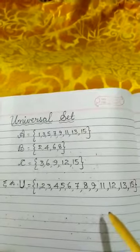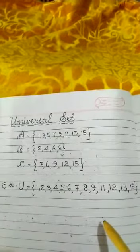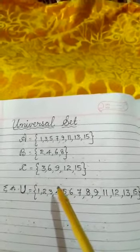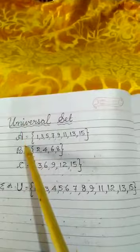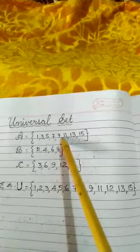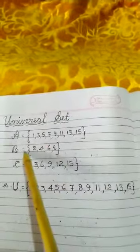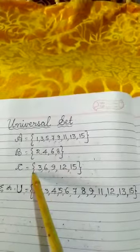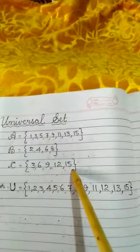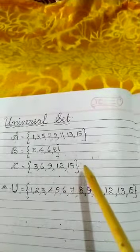Now what is a universal set can be made more clear through this example. You are given three different sets: A is a set of 1, 3, 5, 7, 9, 11, 13, 15; B is a set of 2, 4, 6, 8; and C is a set of 3, 6, 9, 12, 15. If you are asked to make a universal set of these three sets...